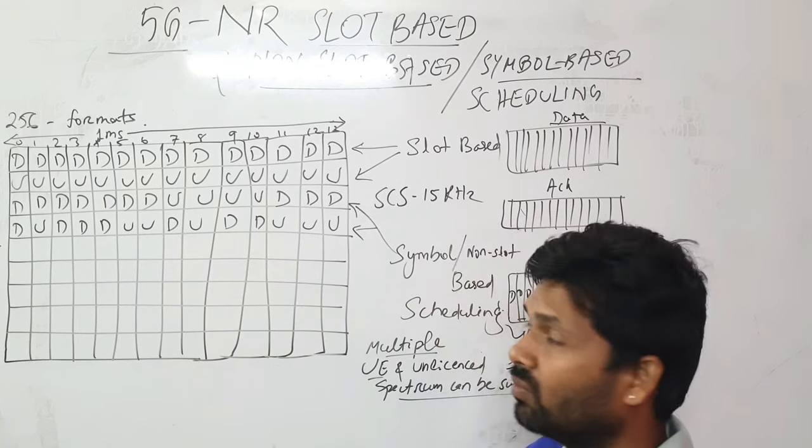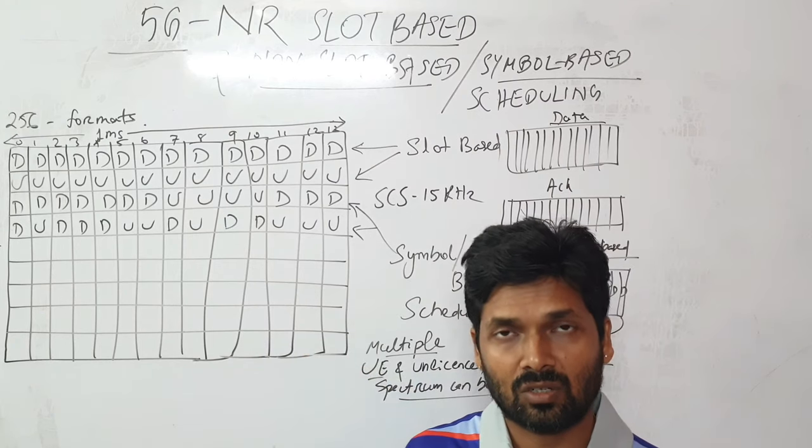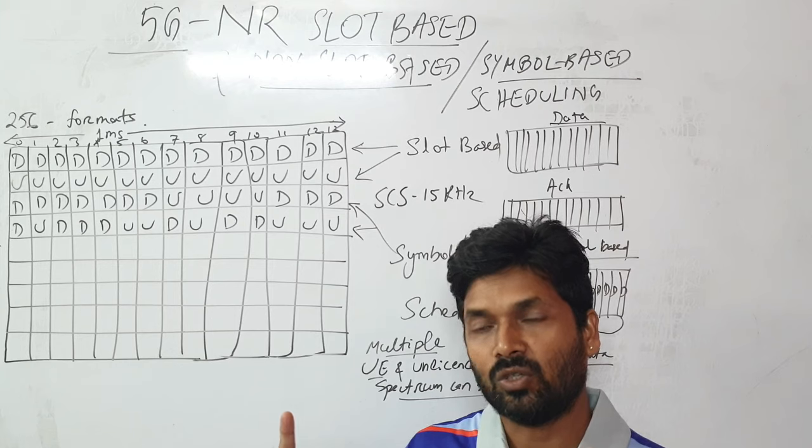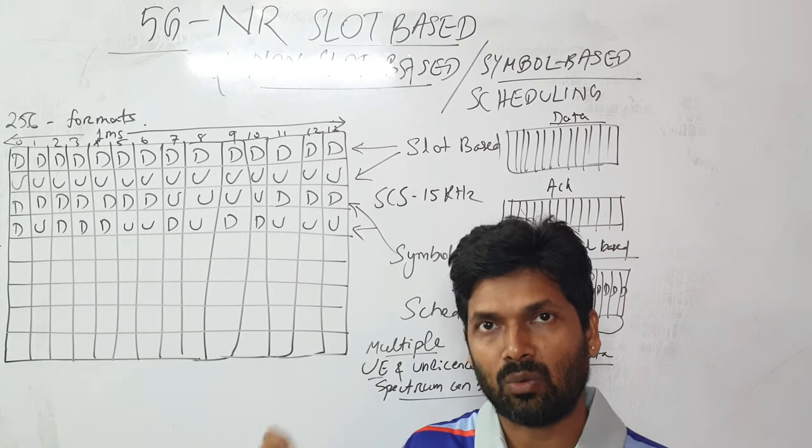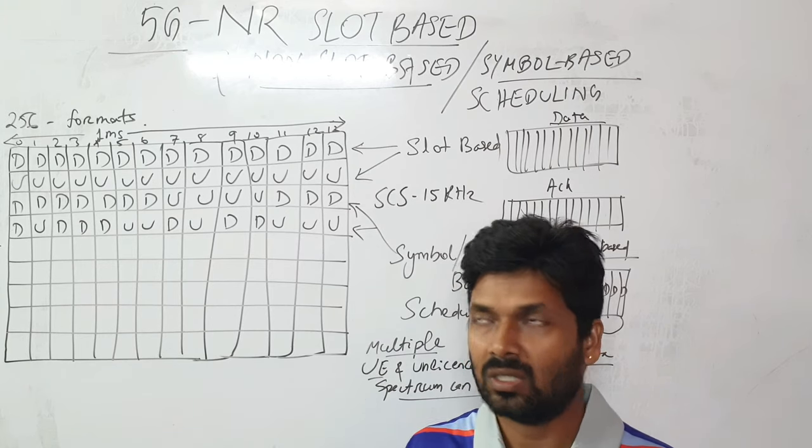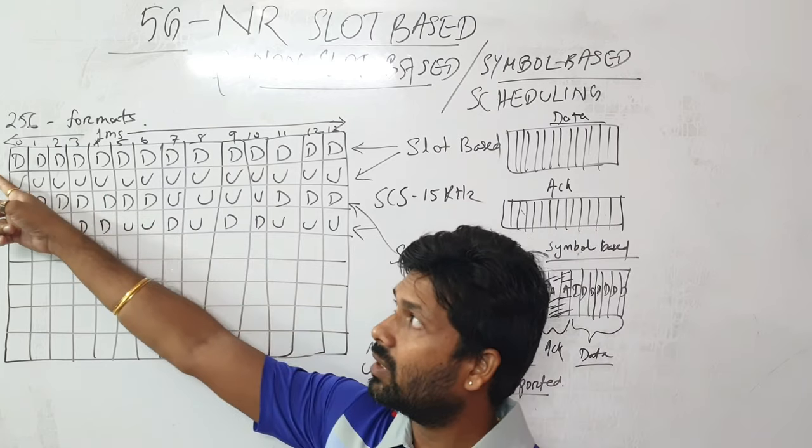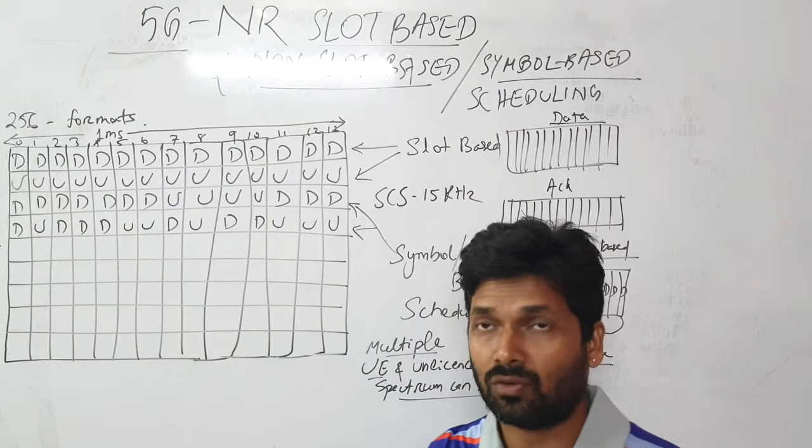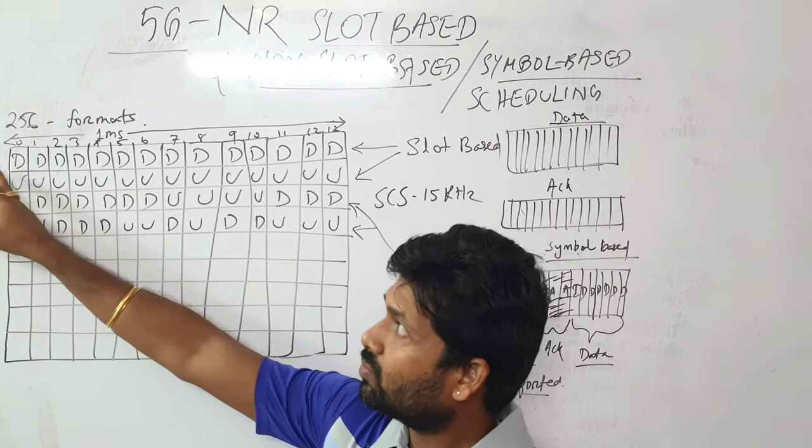We'll discuss slot-based scheduling. Slot-based basically means you use the entire slot for either downlink or uplink transmission. So let's say the first example here, out of 256 different formats, the first one is only downlink transmission.